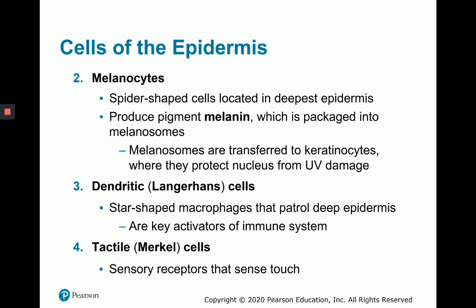Another cell type is the dendritic or Langerhans cell. They are very star-shaped with many extensions and are basically modified macrophages. They patrol the deep layers of the epidermis around the basal layer and are key activators of the immune system. You'll hear more about them when you get to the immune system, but dendritic cells are a main immune cell located in the bottom of the epidermis.